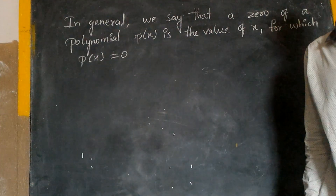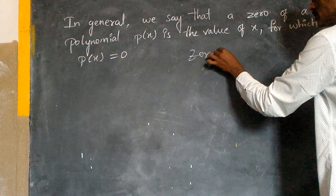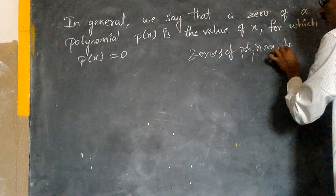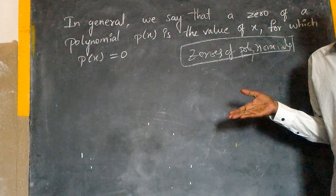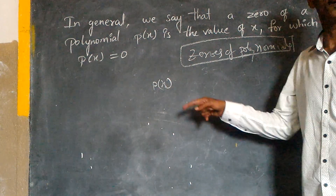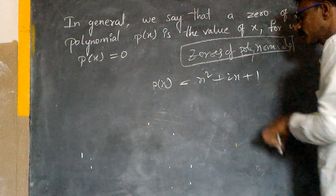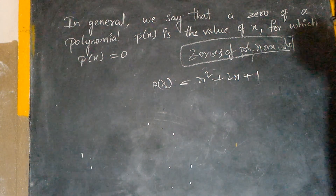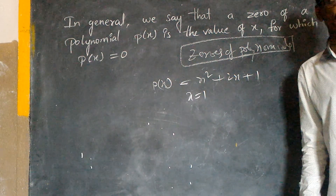Zeros of a polynomial. What is this? Zeros of a polynomial. This is the polynomial in variable x. X1 is the first one. One is the first one.